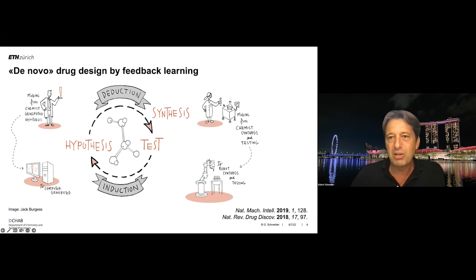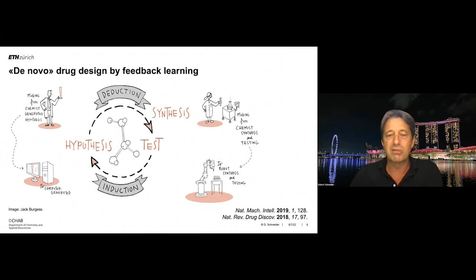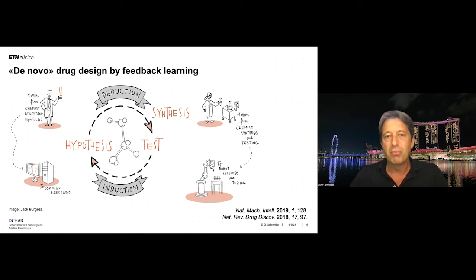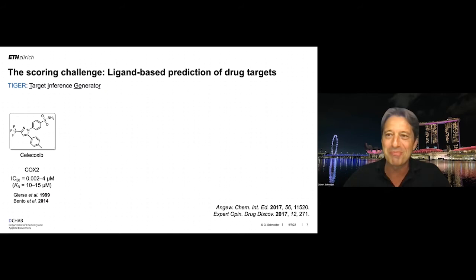In the laboratory world, the human can be at least partially augmented by robotic synthesis and testing. We've developed tools that support both hypothesis generation and testing — deduction and induction — and even try to simulate the whole drug discovery cycle within one system. One of these software tools is TIGER, the Target Inference Generator.